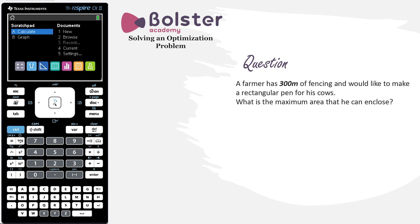It reads: a farmer has 300 meters of fencing and would like to make a rectangular pen for his cows. What is the maximum area that he can enclose?